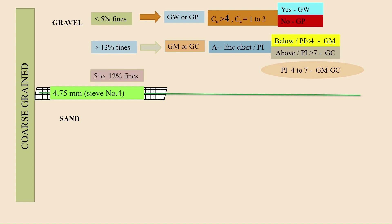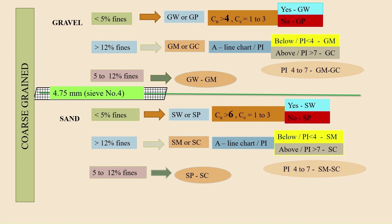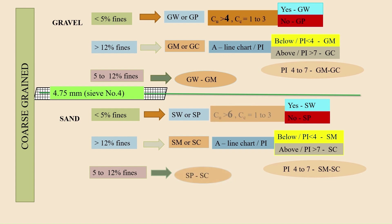If the fine contents are 5 to 12%, then we classify the gravel as a borderline system, which is GW-GM — that is, well-graded gravel to silty gravel condition. In the case of sand, the Cu value must be greater than 6 for well-graded sand, and for Cc, the same range of 1 to 3 is followed. Another thing to note is that if your fine content falls between 5 to 12%, then the category is poorly-graded sand to clayey sand. These are the two differences to note in the sand classification system.